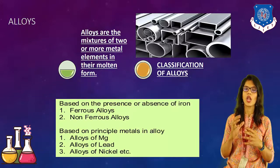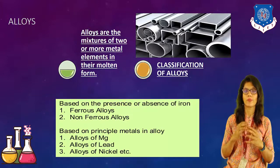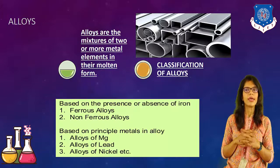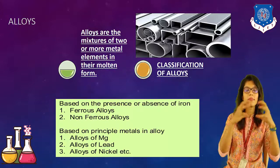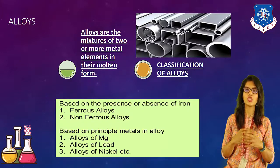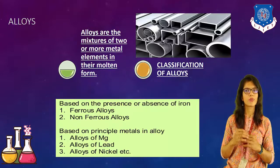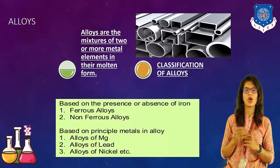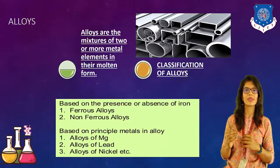Alloys can be defined as the mixture of two or more metal elements in their molten form. Make sure they have to be in molten form and not in solid form — if they are in molten form, then and only then can they be mixed together. Now let's see the classification of alloys. We can classify alloys based upon two different criteria: first, based on the presence or absence of iron, and second, based on the principal metals present in the alloy.